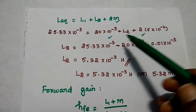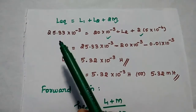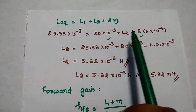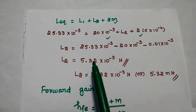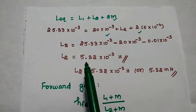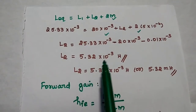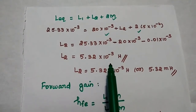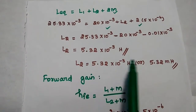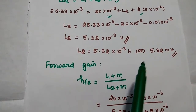Moving the known values to the other side, L2 is equal to 5.32 into 10 to the power minus 3 Henry, which is 5.32 millihenry.